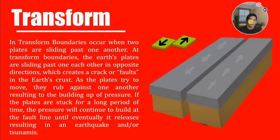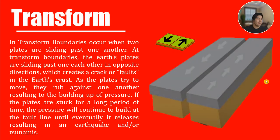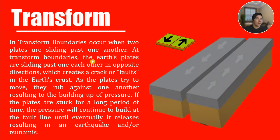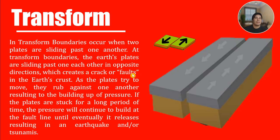Another type of plate boundary is the transform boundary, which occurs when two plates are sliding past each other. At transform boundaries, the earth's plates are sliding past each other in opposite directions, which creates a crack or fault in the earth's crust.